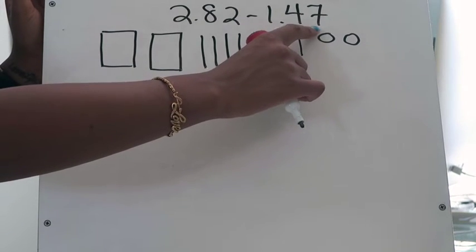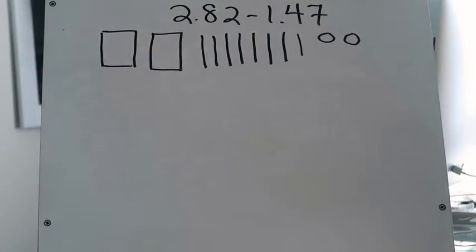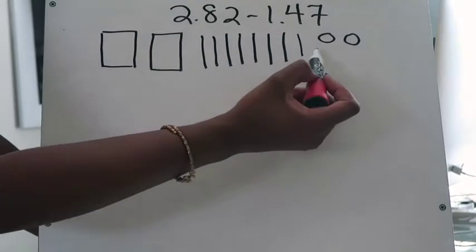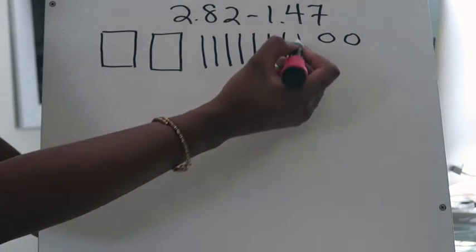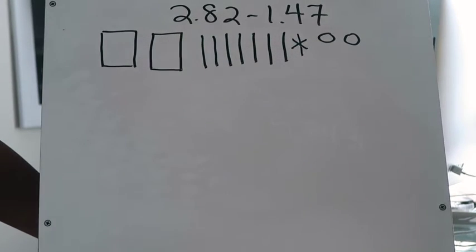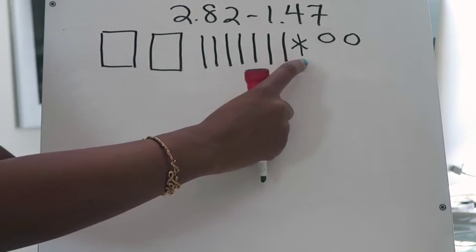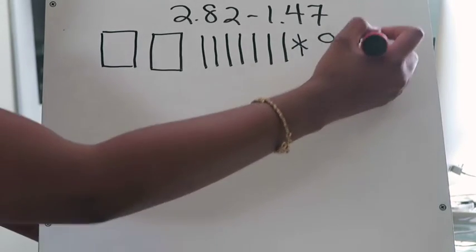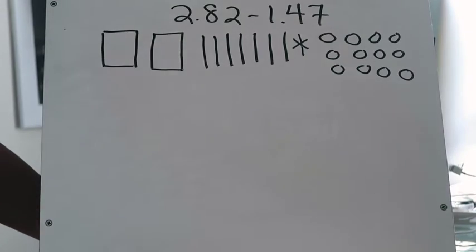Then go to the furthest place value position on the right of the number you're subtracting. In this case it's the seven in the hundredths place, telling me I need to subtract seven hundredths. I do not have enough hundredths to take away seven, so I'm going to take one of my tenths, cross it out, and regroup that as ten hundredths — because there are ten hundredths in one tenth. I'll draw ten hundredths over here.